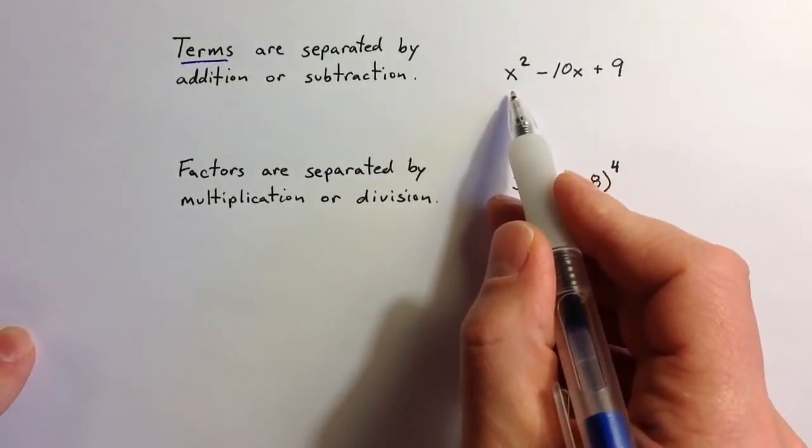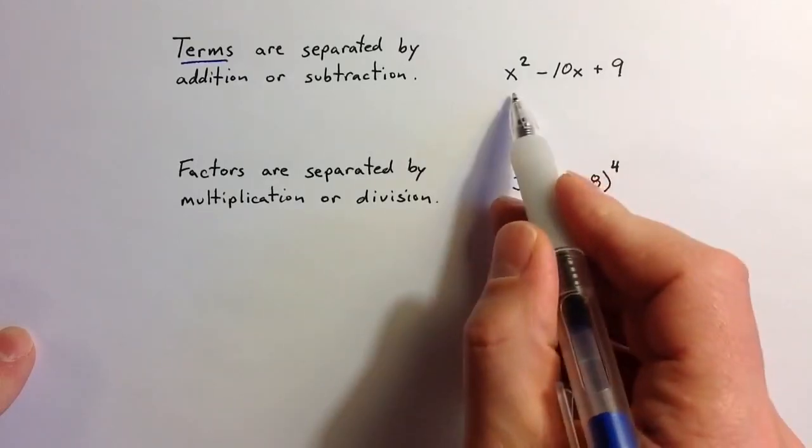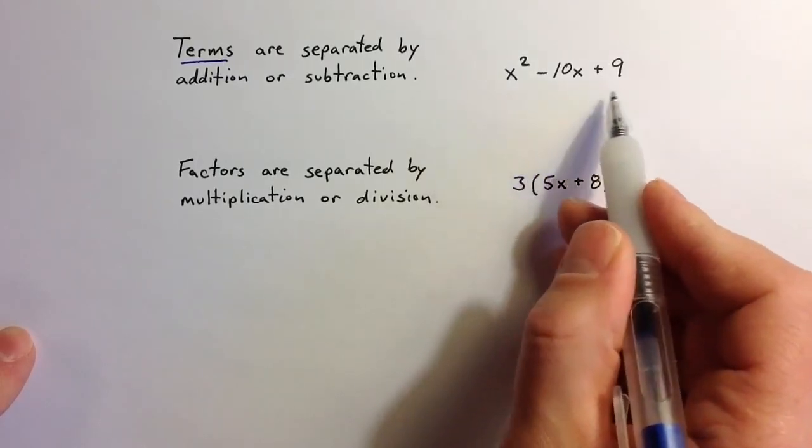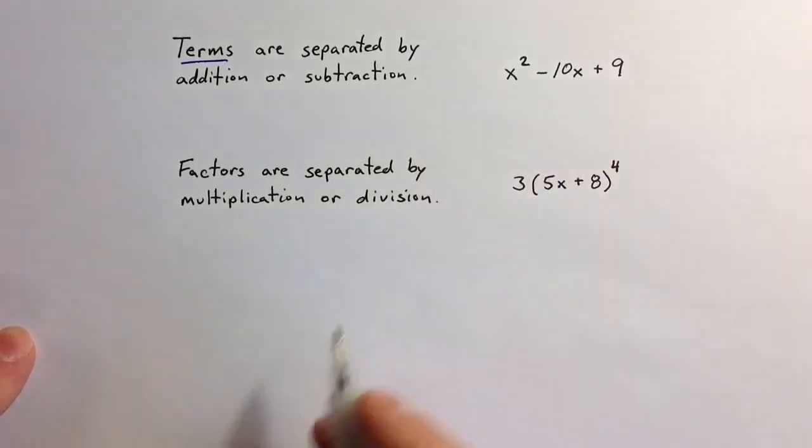In this expression here, we see three separate terms: x squared, 10x, and 9.